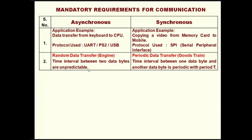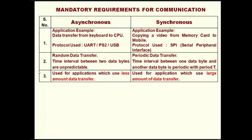In synchronous communication, there is a start bit followed by data bits in sequence. For example, copying a video from the memory card to the mobile — video data is in megabytes. One megabyte transfer starts with a start bit, followed by all bits in sequence one through eight, and only when it completes does it close. Nobody can disturb in between. So synchronous means periodic and large amounts of data, while asynchronous means very small amounts of data — like a keyboard, which uses very little data transfer, hence uses asynchronous communication.